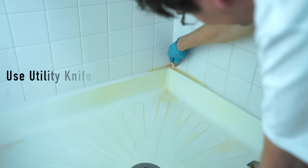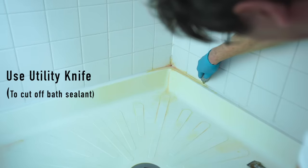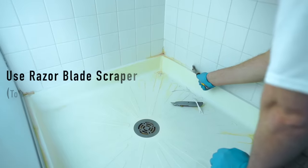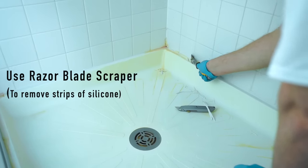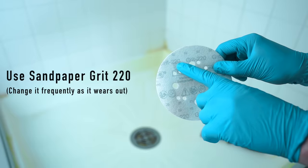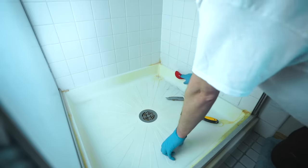To get started, we will need a utility knife and razor blade scraper to remove sealant between tiles and shower base. Now take sandpaper grit 220 to remove remaining silicone.